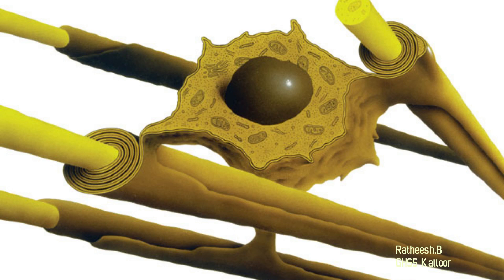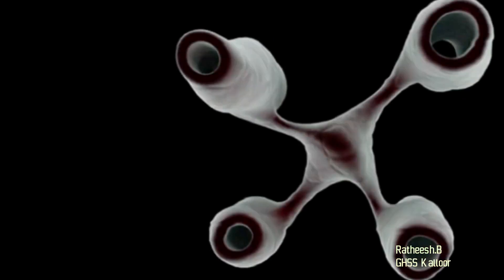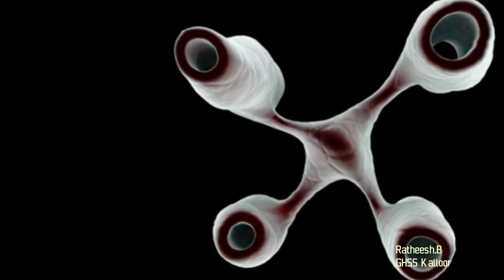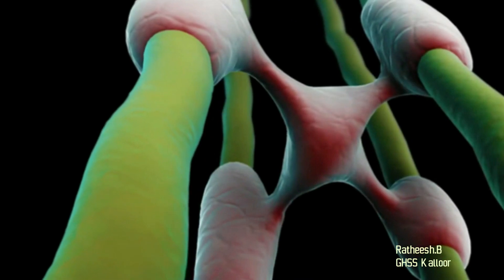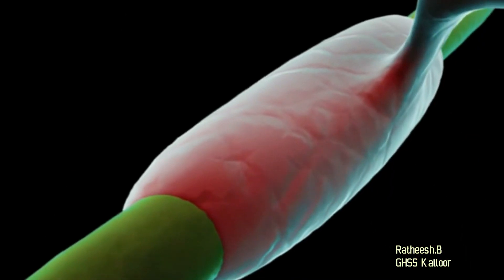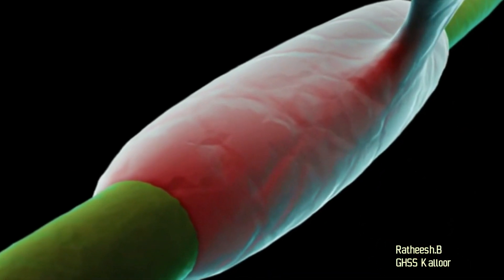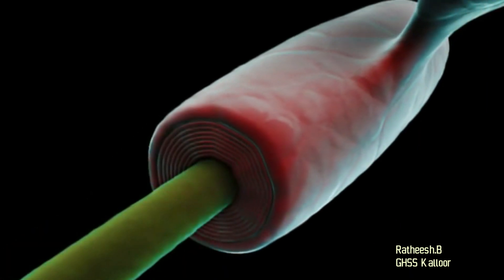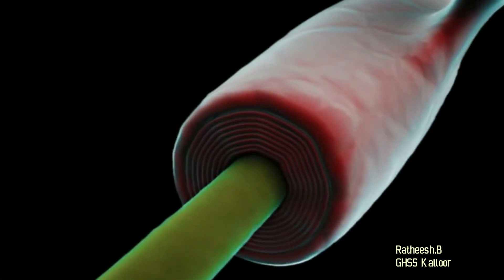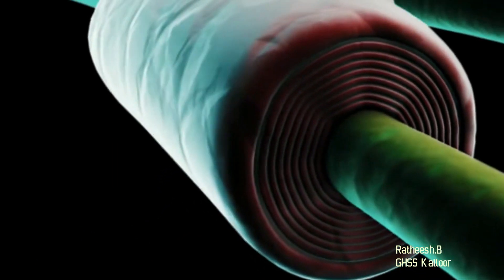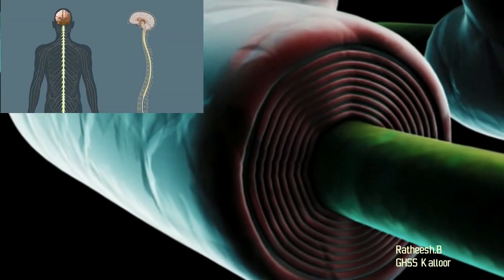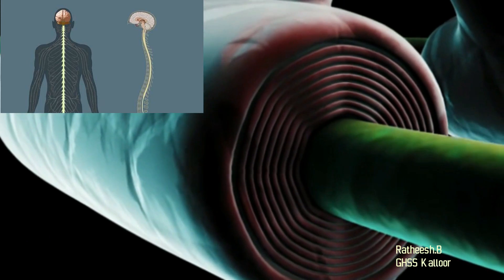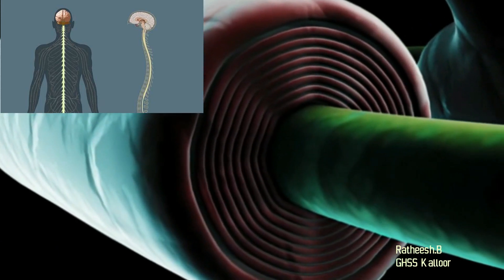Now let us examine how oligodendrocytes form the myelin sheath. Observe the image and video. An oligodendrocyte constructs myelin sheath by covering different axons simultaneously, or by covering different parts of the same axon repeatedly. Myelin sheath in the brain and spinal cord is formed by oligodendrocytes.